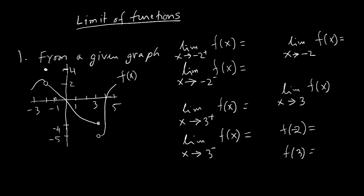First, you see what happens to negative 2 plus, so negative 2 is here, plus meaning is a little right side. The value of the limit is 2, so you write here 2. Next you see negative 2 minus, so negative 2 is here, a little on this side, which is also 2.